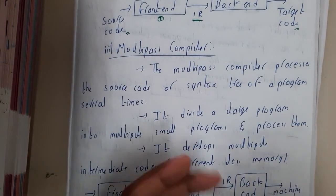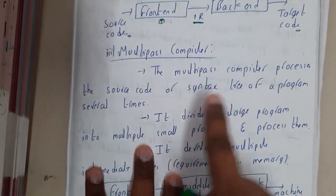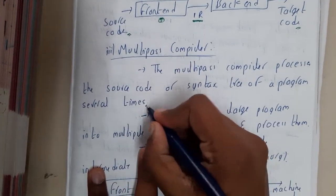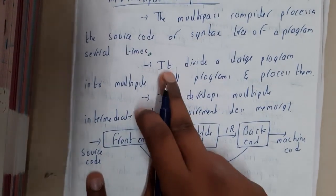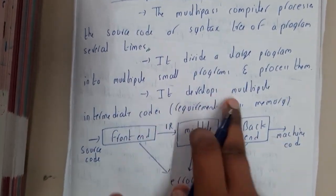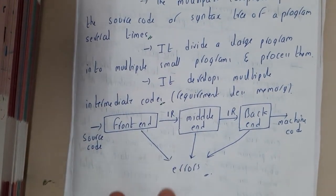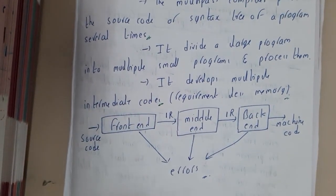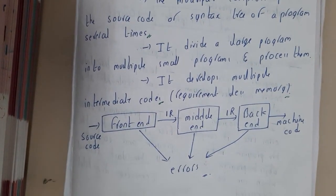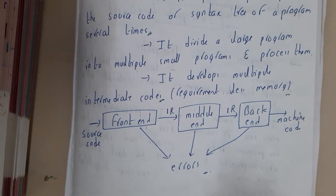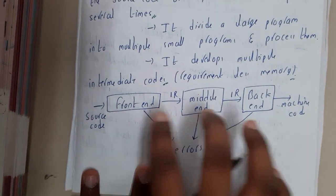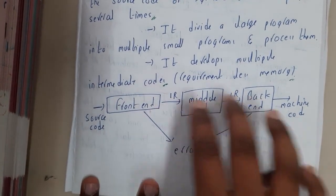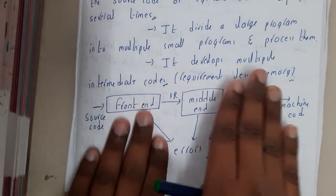Similarly, the multi pass compiler — from the name you can tell there will be multiple layers. The multi pass compiler processes the source code or syntax tree of the program several times. It divides a large program into multiple small programs and processes them. It develops multiple intermediate codes, requiring less memory — because you are creating multiple intermediate codes you don't need a huge memory space. In the diagram you have source code as input, intermediate codes generated twice, and then machine code as output. You can also add more layers.